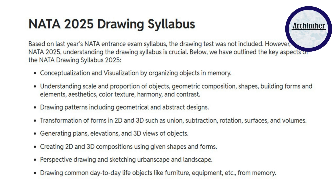Transformation of forms in 2D and 3D — such as union, subtraction, rotation, surfaces and volumes. Then generating plans, elevation, and 3D views of objects, which is one of the important topics and can even be asked in MCQ. Creating 2D and 3D compositions using given shapes and forms. Perspective drawing, sketching, urbanscape, and landscape — there are 4 types of perspectives, so learn that. Also, drawing common day-to-day life objects like furniture and equipment. Make sure you are practicing all of these points.